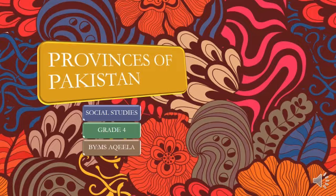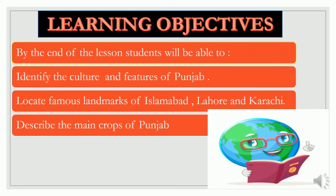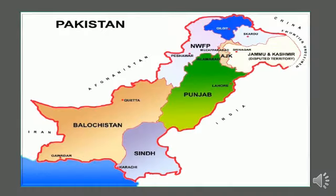Learning objectives: by the end of the lesson you will all be able to identify the culture and features of Punjab, locate famous landmarks of Islamabad, Lahore, and Karachi, and describe the main crops of Punjab.